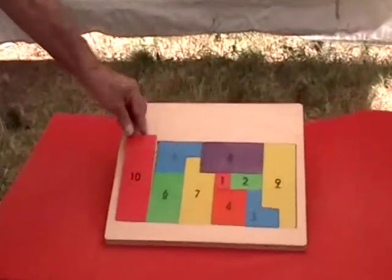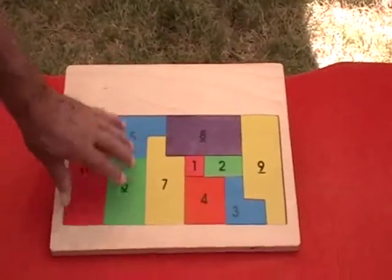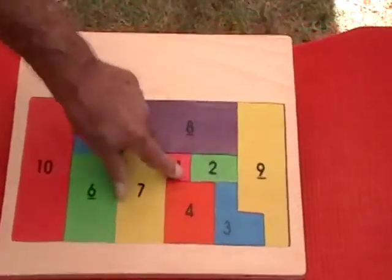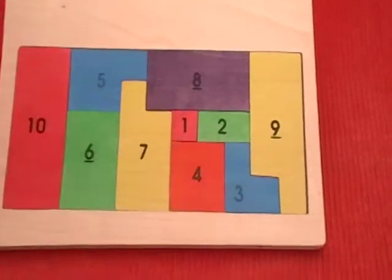This is what we call our arithmetic puzzle, or the math puzzle. Each number is a multiple of one. Two is twice as big as the one, three is three times as big as the one.